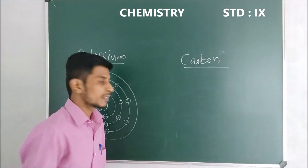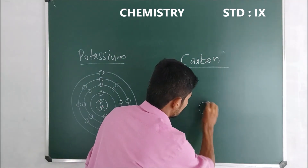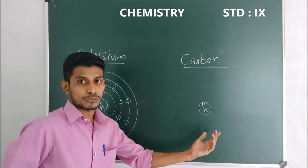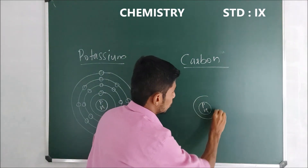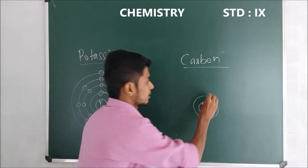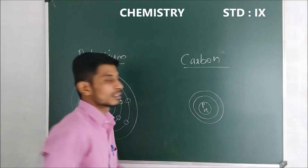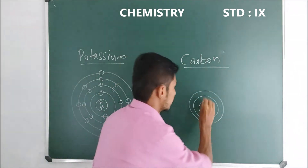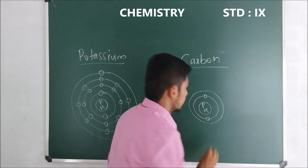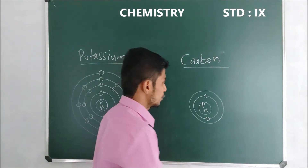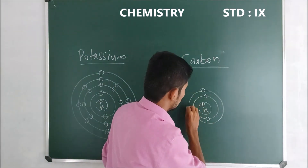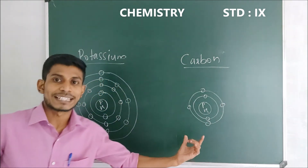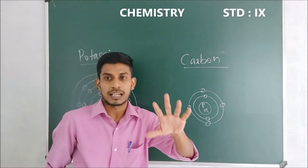And what about the carbon atom? Let us draw the nucleus, which has both protons and neutrons. Around that nucleus we have the K-shell and then the L-shell, because carbon has only two shells. In the K-shell we have 2 electrons, and in the L-shell we have 4 electrons. That is the Bohr model of the carbon atom.